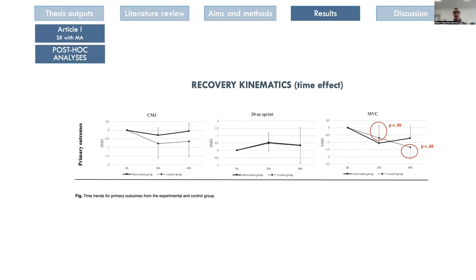Within-group analysis showed that neither the intervention nor the control group showed changes in CMJ or 20-meter sprint at 24 or 48 hours compared to baseline, but there was a trend of decreased performance in both groups, except for CMJ in the intervention group at 48 hours. Maximal voluntary contraction was decreased at 24 and 48 hours for the control group, with only a trend of decrease in the intervention group. We can conclude that it is important to keep using recovery strategies: the intervention group always recovered better than the control group.